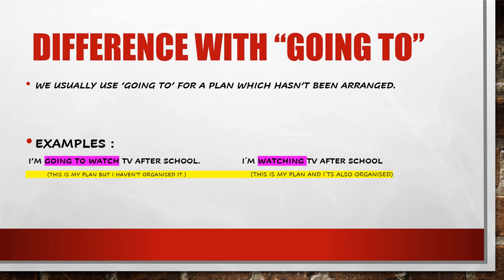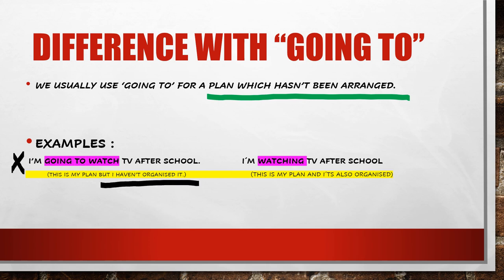Very important: what's the difference with going to? We usually use going to for a plan which hasn't been arranged. For example: I'm going to watch TV after school — this is my plan, but I haven't organized it. Compare with: I'm watching TV after school — this is my plan and it is also organized.